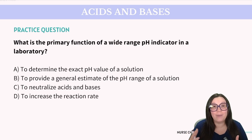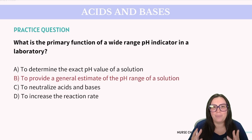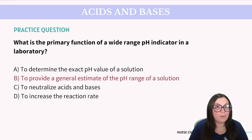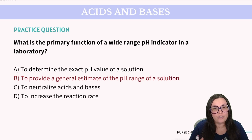Question: What is the primary function of a wide range pH indicator in a laboratory? Is it to determine the exact pH value, to provide a general estimate of the pH range, to neutralize acids and bases, or to increase reaction rates? The correct answer is B — to provide a general estimate of the pH range of a solution. Wide range pH indicators give a visual approximation of pH value across a broad range, helping identify whether a solution is strongly acidic, neutral, or strongly basic.